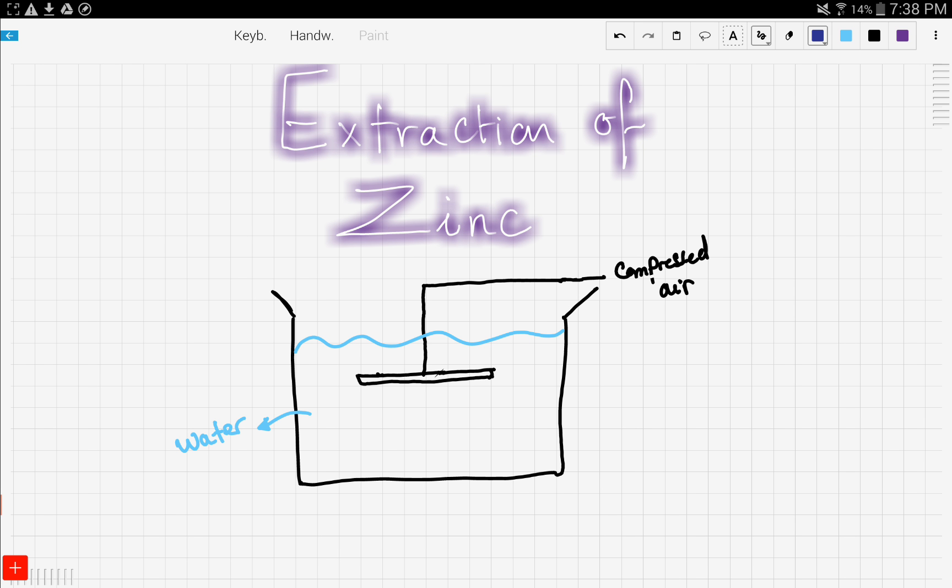First, the zinc is extracted as an ore with so many impurities. So you have like a zinc ore here, so many impurities. And this ore is crushed into tiny, tiny pieces.